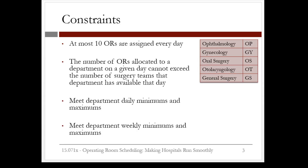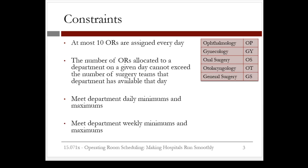Also, the number of operating rooms allocated to a department on a given day cannot exceed the number of surgery teams that the department has available that day. And we must meet department daily minimums and maximums, as well as weekly minimums and maximums. Let's turn these constraints into math. The first constraint is that at most 10 operating rooms can be assigned on any given day — let's consider Monday, for example.